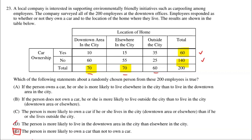Choice C says the person is more likely to own a car if they live in the city — downtown or elsewhere — than if they live outside the city. Combining downtown and elsewhere gives 140 people, and 25 of them own a car: 25 out of 140 is about 18%. Now comparing to outside the city: 35 out of 60 own a car, which is 58%. So they have it backwards — if you live outside the city, you're more likely to own a car, which makes sense because you have to drive in.